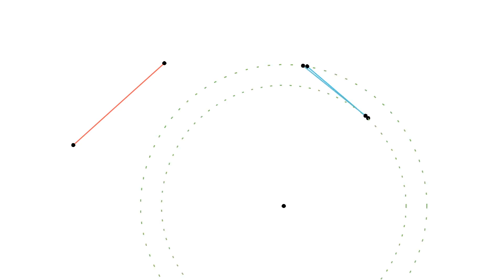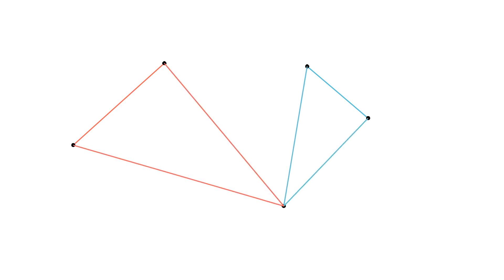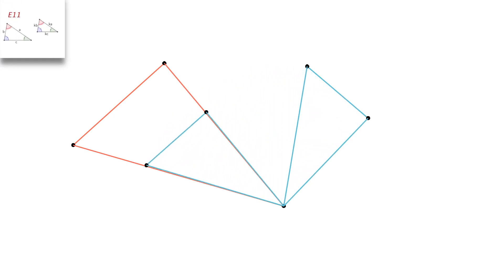Now it is time to answer the questions: which are these two points, and why do they have these bizarre properties? We will now be looking at the first spiral similarity in more detail. Notice that if the blue segment transforms into the red segment, then the blue triangle transforms into the red triangle. Hence, the two triangles are similar.